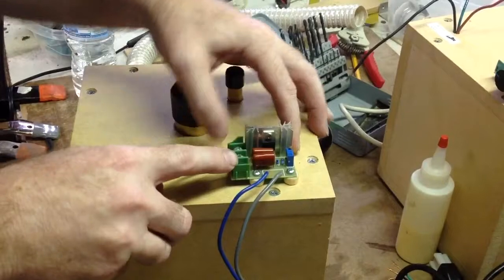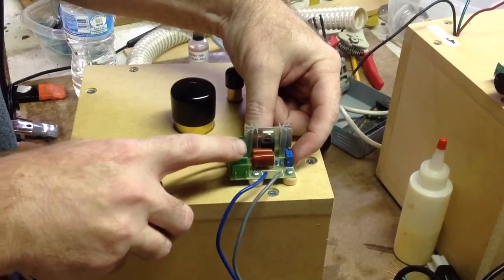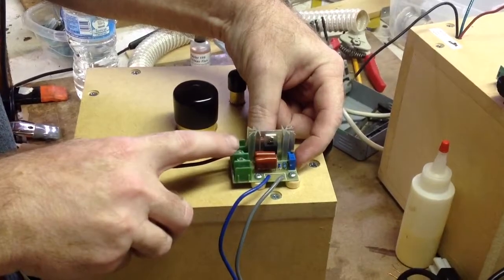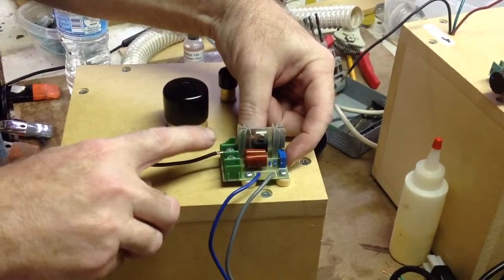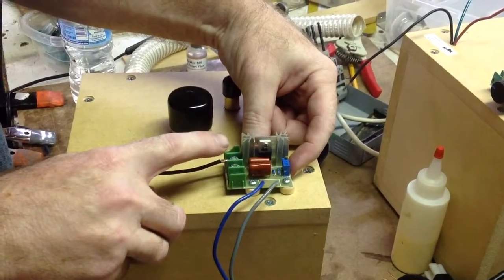Another benefit of this little unit is this little trimmer pot right here. Turning that little screw counterclockwise lowers the minimum volume level. Turning it clockwise raises the minimum level.